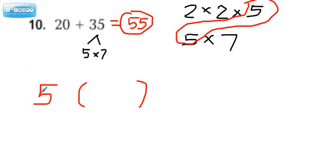So now if you think about it, 5 times what is 20? And that number is 4. 5 times what is 35? And that would be 7.